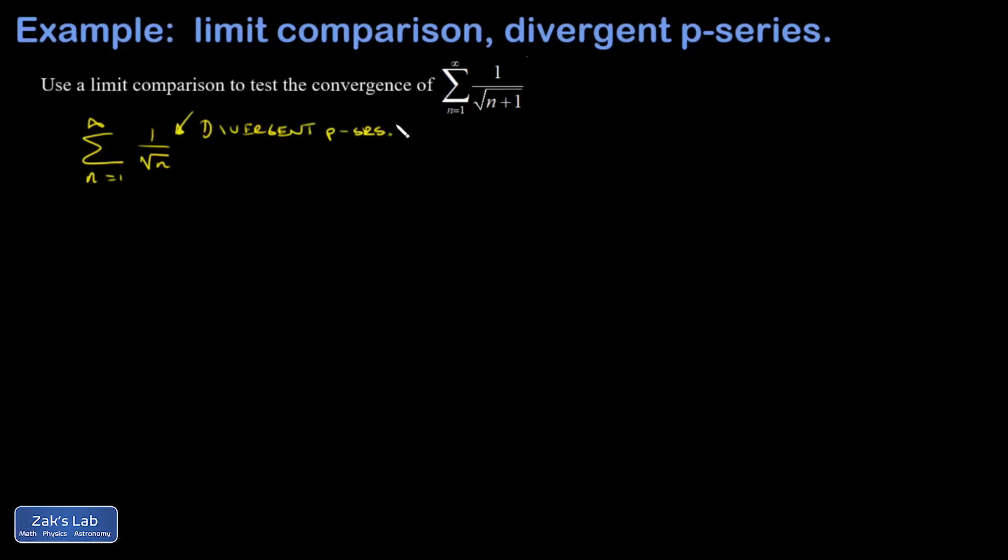But if my terms are a little bit smaller than those of a divergent series, that doesn't show anything. I know this one blows up to infinity, but the terms over here are smaller, so maybe it doesn't blow up to infinity. That's why limit comparison is invoked in this case.